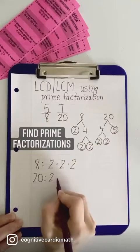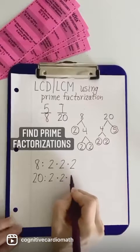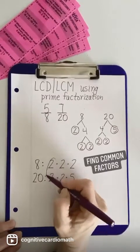So we got 2 times 2 times 2 and 2 times 2 times 5, and then we'll look for the factors that they have in common.